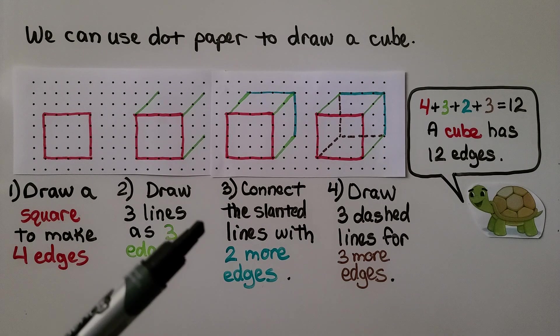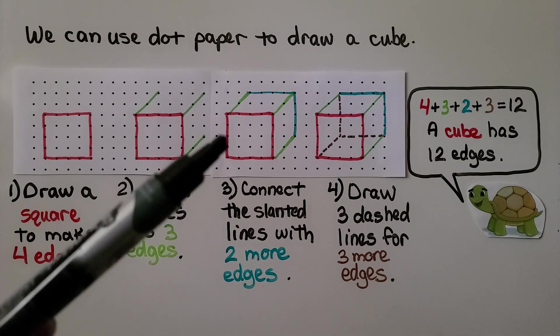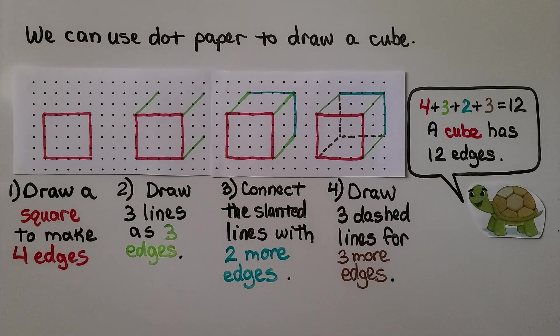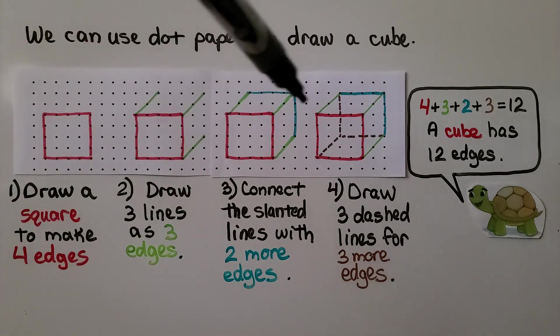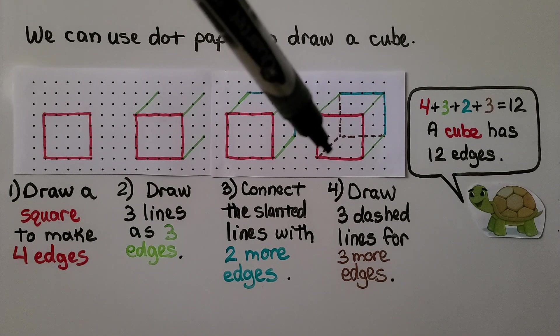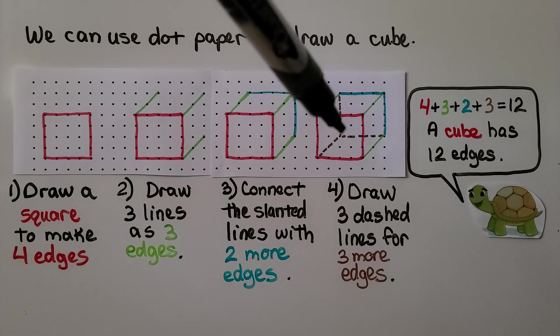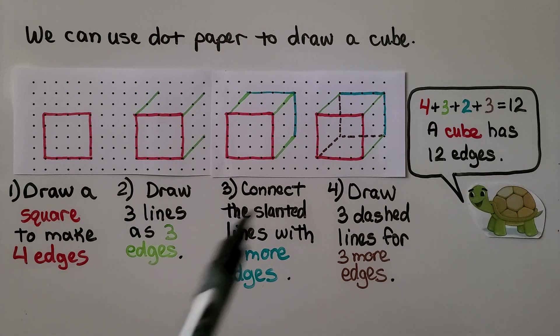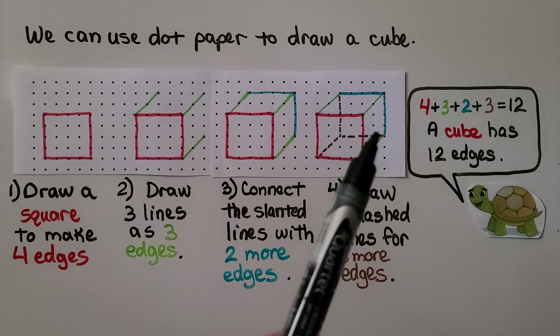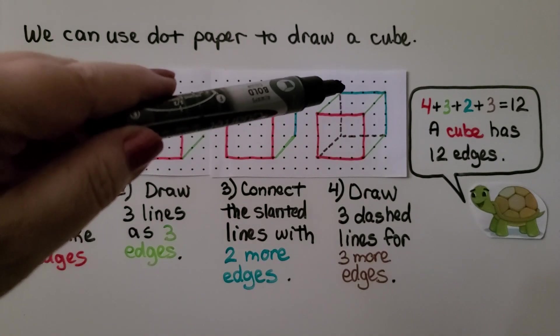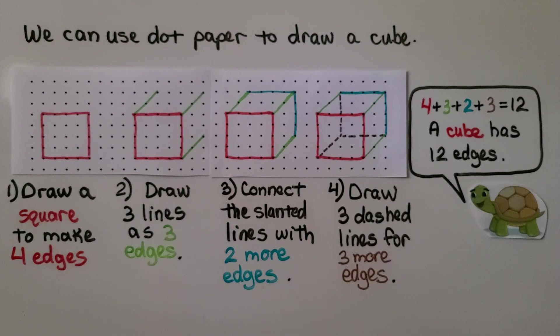The third thing we do is connect the slanted lines with two more edges. We draw a line across here and a line coming down. And the last thing we do is draw three dashed lines for three more edges. So we draw a dashed line just like we drew the green ones. We go through one dot to the next one on the same slant. And we draw a dotted line coming across and one in the back connecting this back corner down.